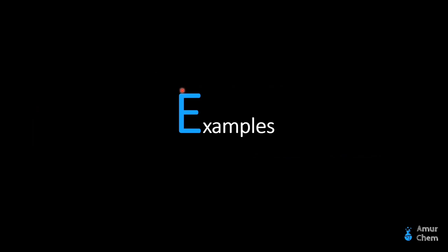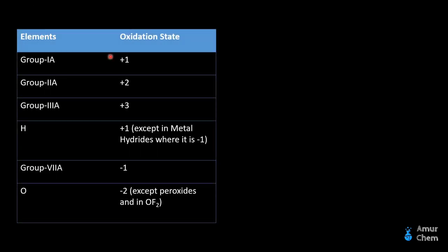Now we will go through some examples of oxidation state or oxidation number. Here are some elements with their oxidation states: Group 1A, 2A, 3A, hydrogen, Group 7A, and oxygen.